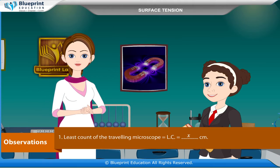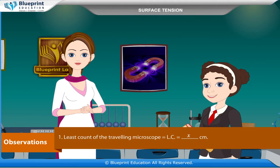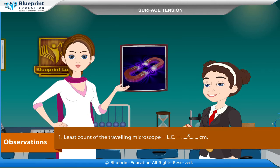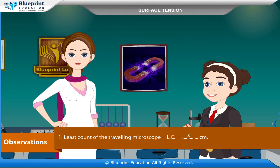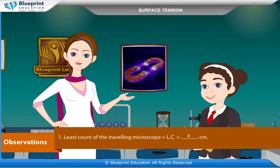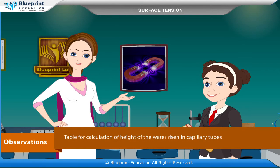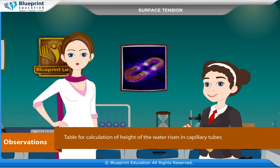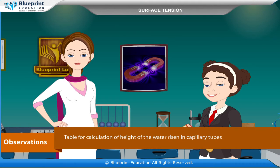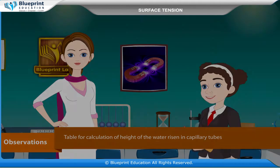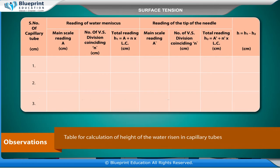Observations. Least count of the travelling microscope is equal to L.C. = X centimeter. Table for calculation of height of the water risen in capillary tubes, with columns for serial number of capillary tube.